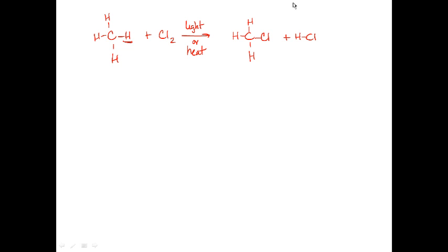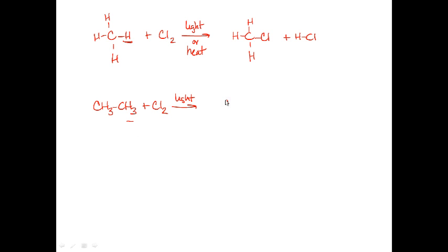We're going to deal with situations where I do monochlorination only, or monobromination — in other words, I'm just going to replace a single hydrogen on the molecule with the halogen. Let's make it a little bit more complicated and use ethane and do chlorination of ethane with light. How many possible products are there for this reaction? If you said there was only one possible product, namely 1-chloroethane or ethyl chloride, you're right.